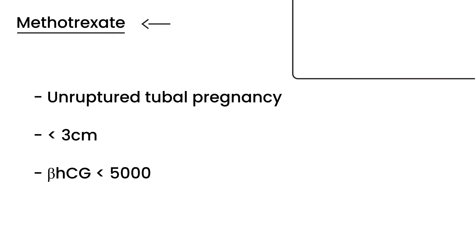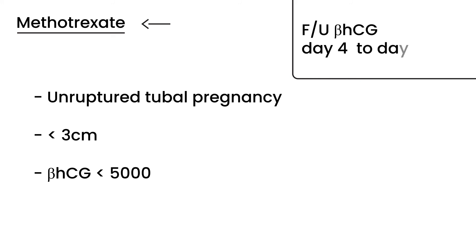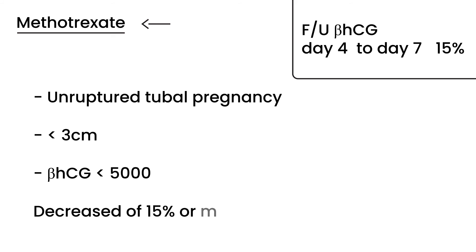There is also a very important follow-up component to methotrexate treatment. After giving the drug, on day four and day seven you must measure the beta-hCG level. You are looking for a decrease of 15 percent or more. If that decrease is confirmed between days four and seven, then you know methotrexate is working. If not, you give a second dose of methotrexate or proceed to surgery.